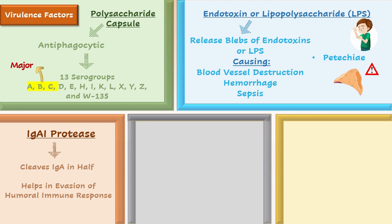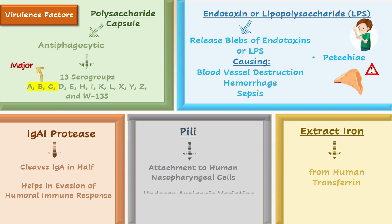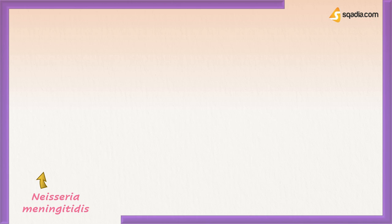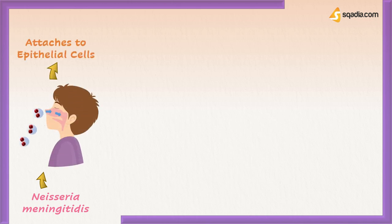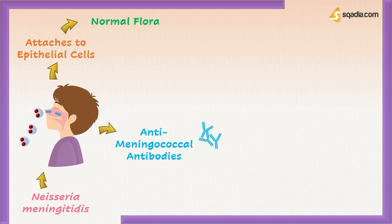Neisseria meningitidis can extract iron from human transferrin via a non-energy-requiring mechanism. The pili of Neisseria meningitidis allow attachment to human nasopharyngeal cells and undergo antigenic variation to avoid attack by the immune system. Despite these virulence factors, entering through the nasopharynx via inhalation of respiratory droplets, the bacterium attaches to epithelial cells with the help of pili and constitutes part of normal flora. Carriers develop anti-meningococcal antibodies through this asymptomatic infection, becoming naturally immunized.